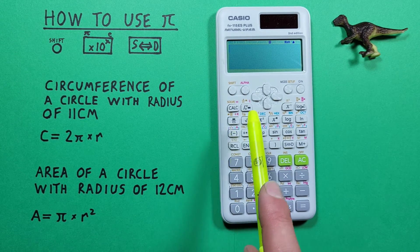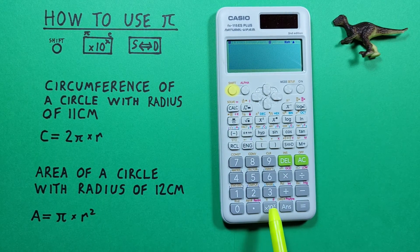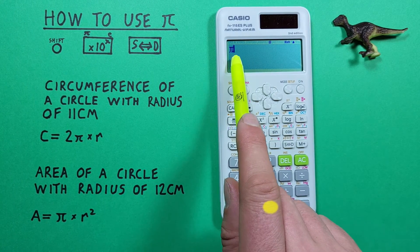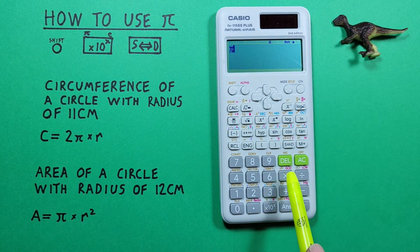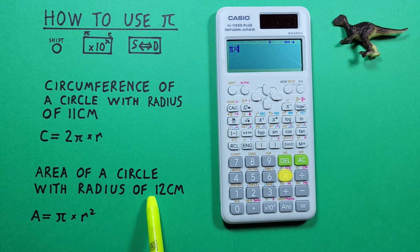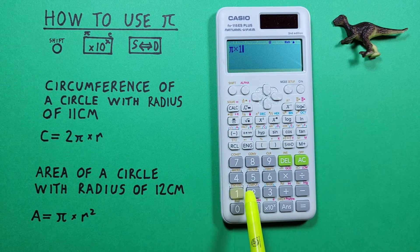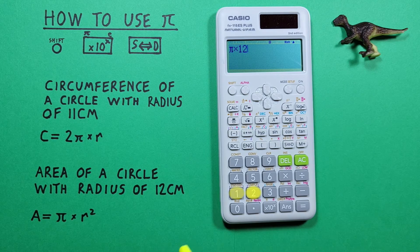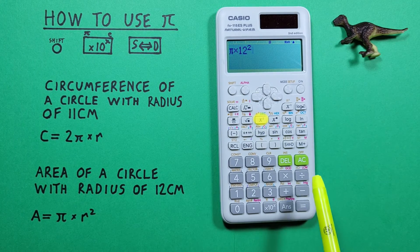What we do is start by entering pi, so shift times 10 to the x to get our pi there, times our radius which was 12, and then we square that and press equals.